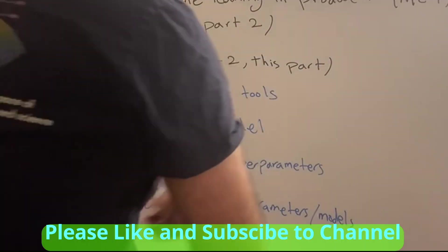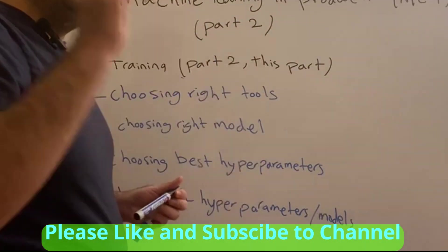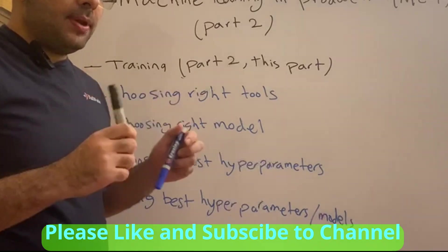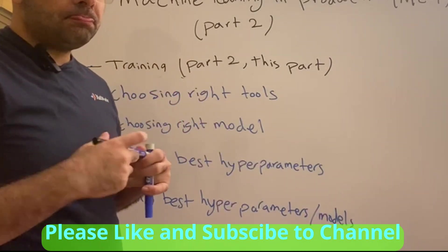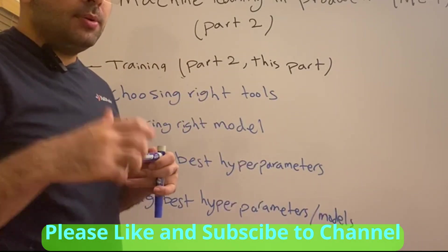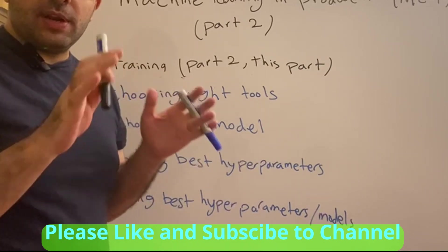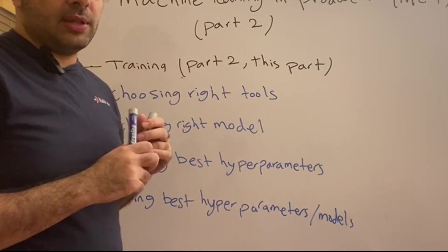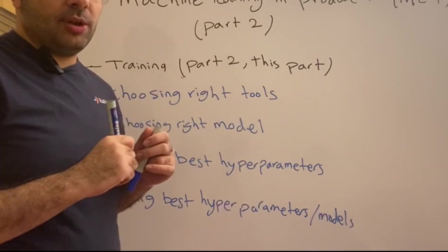Hi everyone, welcome to the second part of machine learning in production. In the first part, I explained about bringing raw data, pre-processing your raw data, and also feature engineering, which is very important. Go and watch it in the first video if you haven't watched it already — I will put a link in the description.